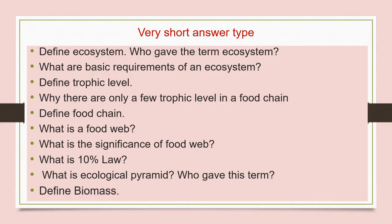The first category of questions are short answer questions which you have to answer in two to three lines. These questions will cover the first compulsory question of your paper. First question is: define ecosystem — who gave the term ecosystem? Second question is: what are basic requirements of an ecosystem? Third is: define trophic level. Next is: why there are only a few trophic levels in a food chain? Next is: define food chain. Next is: what is the food web? Next is: what is the significance of food web? Next question is: what is the 10% law?